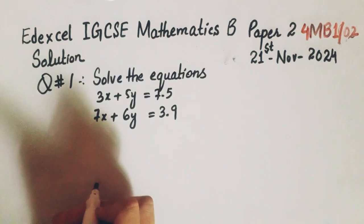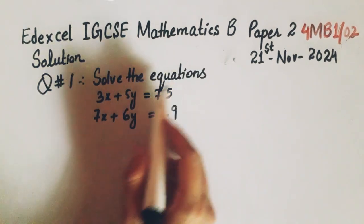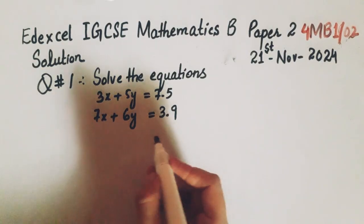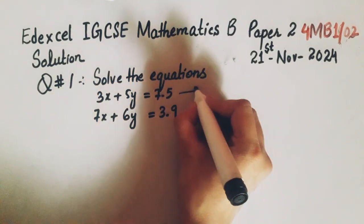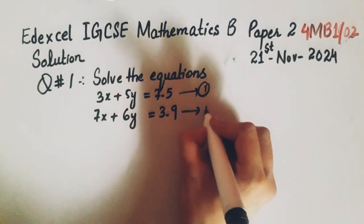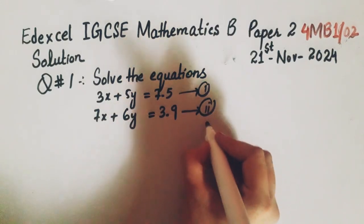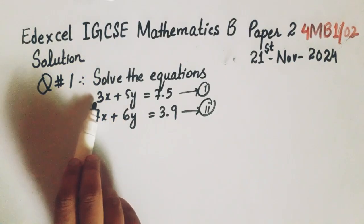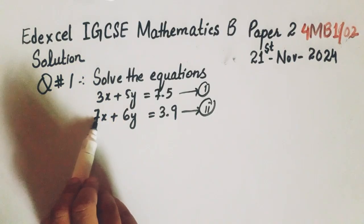Now we will start from question number 1. The question is solve the equations to find the value of x and y. First of all, we will say this is equation 1 and this is equation 2. After that, we will solve this as multiply equation 1 by 7 and equation 2 by 3.